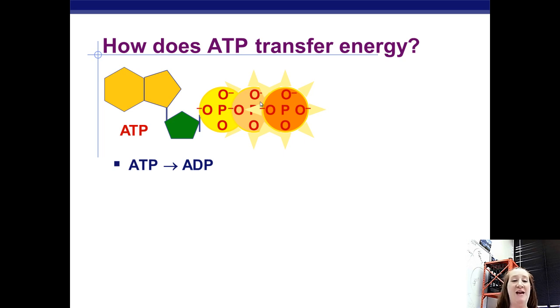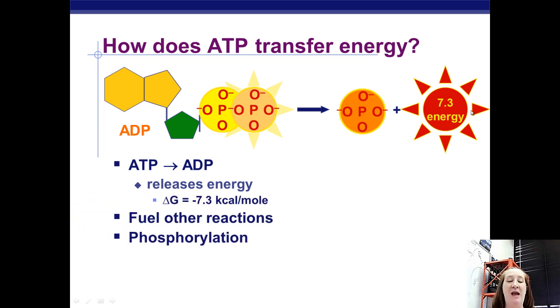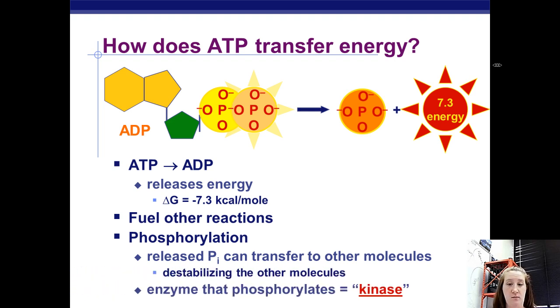So how does ATP transfer energy? When ATP goes to ADP, goes from three phosphates to two, there's now this lone phosphate group just hanging out. And when that phosphate comes off, the molecule actually releases 7.3 kcals of energy. That 7.3 kcals can be used then to fuel other reactions. And that happens by taking this phosphate and shoving it onto another molecule. We call that phosphorylation. Putting the phosphate onto another molecule is going to make that new molecule really unstable and give it energy.